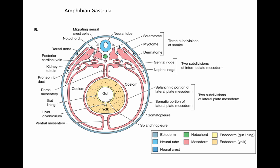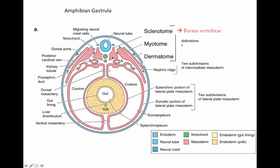At this stage the somites are also starting to divide into their three components. Closest to the neural tube and notochord is the sclerotome, which develops into the bony vertebrae that surround and protect the neural tube. The myotome forms the segmental body musculature. And lateral to that is the dermatome, which forms the inner layer of the skin — the dermis.